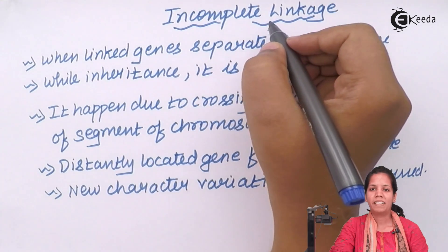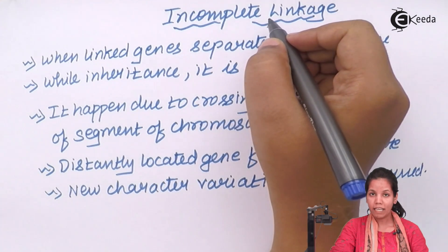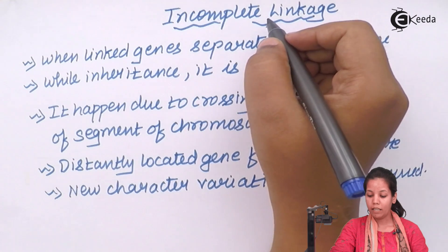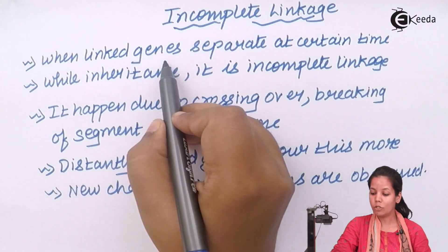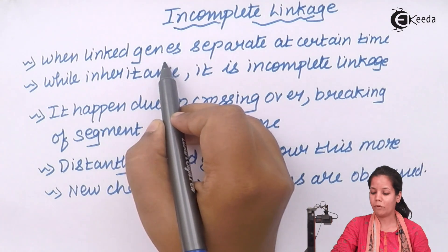Incomplete linkage happens when your linked genes separate.